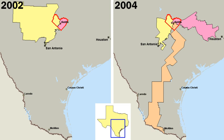Types of city governments vary widely across the nation. However, almost all have a central council, elected by the voters, and an executive officer, assisted by various department heads, to manage the city's affairs. Cities in the west and south usually have non-partisan local politics. There are three general types of city government: the mayor-council, the commission, and the council-manager. These are the pure forms; many cities have developed a combination of two or three of them.